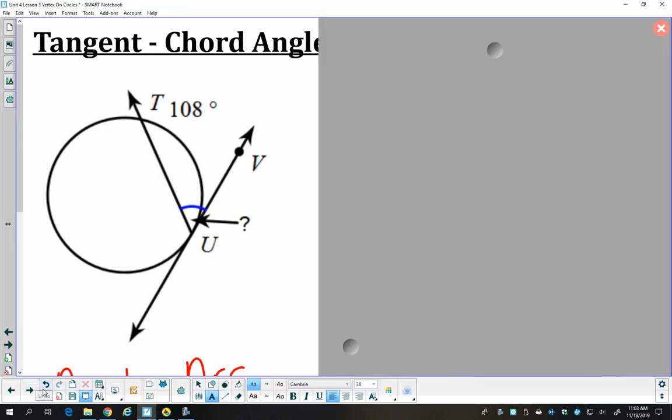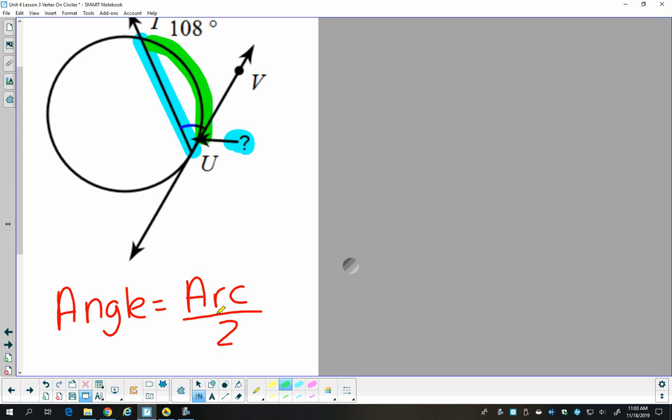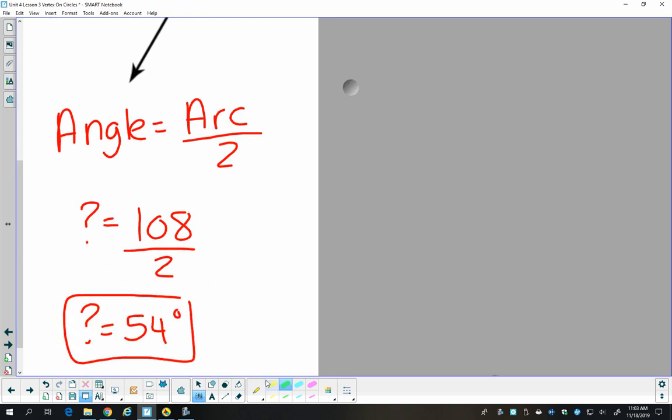So let's do a couple examples. Here I have a tangent and a chord. The chord exists between T and U. And the chord intersects the tangent at its point of tangency. And we have this angle. And also, the arc it intercepts. So we can plug into our relationship and find that angle is 54 degrees.